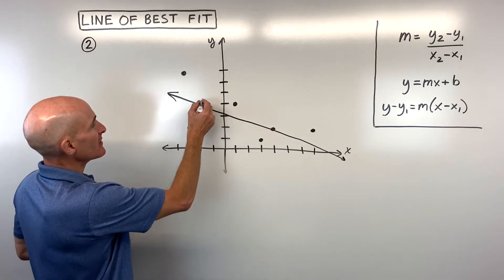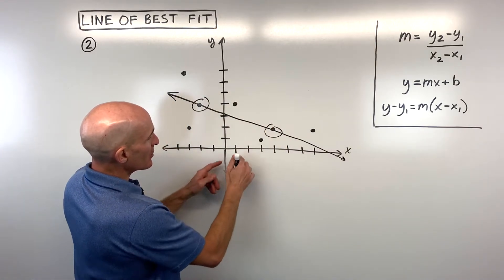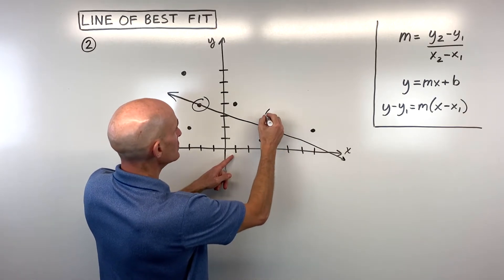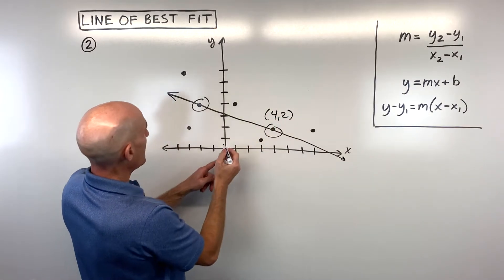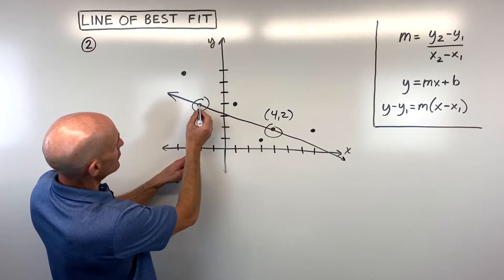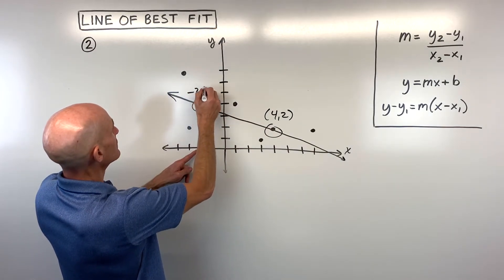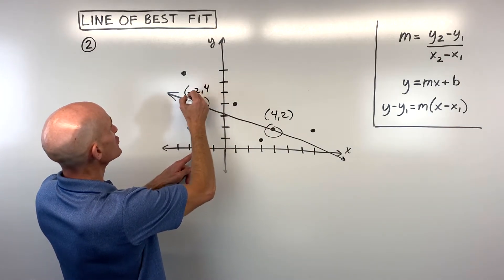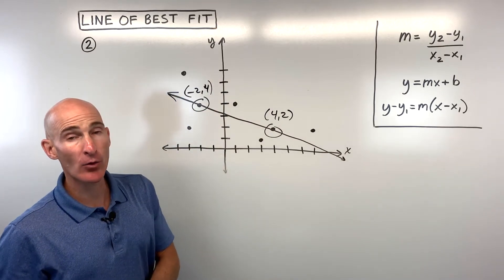Now, you can see it's going through these two points right here. These are the points 4 comma 2, and negative 2 comma 4.